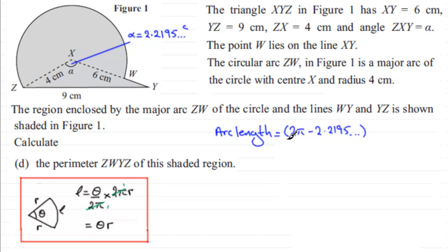It's this angle that we compare to a full turn all the way around which is 2π radians. And it's this fraction of the circumference of the circle which is 2πr, r being the radius which is from X to W or from X to Z which is 4cm so we need to just multiply that by 4.